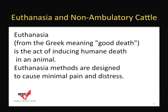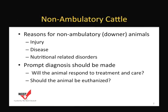This discussion will focus on non-ambulatory animals, or downers, and euthanasia. There are several reasons for non-ambulatory or downer animals, and they typically include injury, disease, or nutritionally related disorders. A prompt diagnosis should be made to determine if the animal will respond to treatment and care or whether the animal should be euthanized.